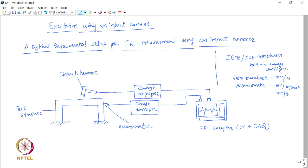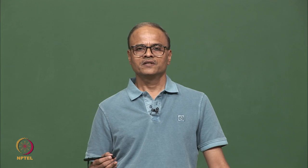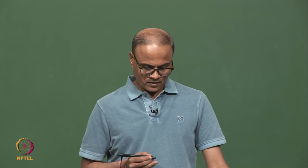If the sensors are of charge type, the force transducer sensitivity would be in terms of picocoulombs per Newton, and the accelerometer sensitivity in picocoulombs per meter per second squared or picocoulombs per g of acceleration. In either case, what we get in the FFT analyzer are voltage signals which are proportional to the force and acceleration signals.